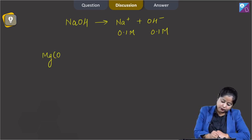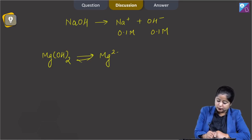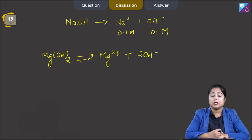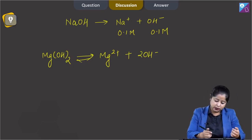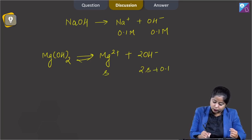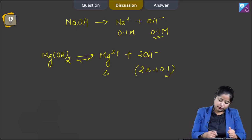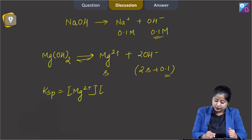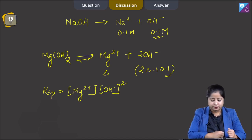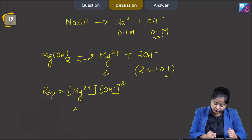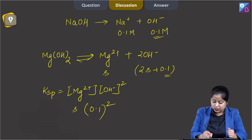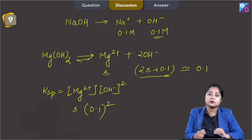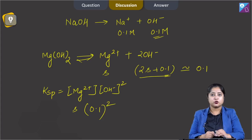Magnesium hydroxide dissociates into magnesium ion and hydroxide ion. Assuming the solubility of magnesium hydroxide is S mol/L, the concentration of Mg²⁺ is S and the concentration of OH⁻ is 2S + 0.1, where 0.1 comes from NaOH. The Ksp of magnesium hydroxide equals [Mg²⁺][OH⁻]². Since S is very much smaller than 0.1, we approximate 2S + 0.1 ≈ 0.1.